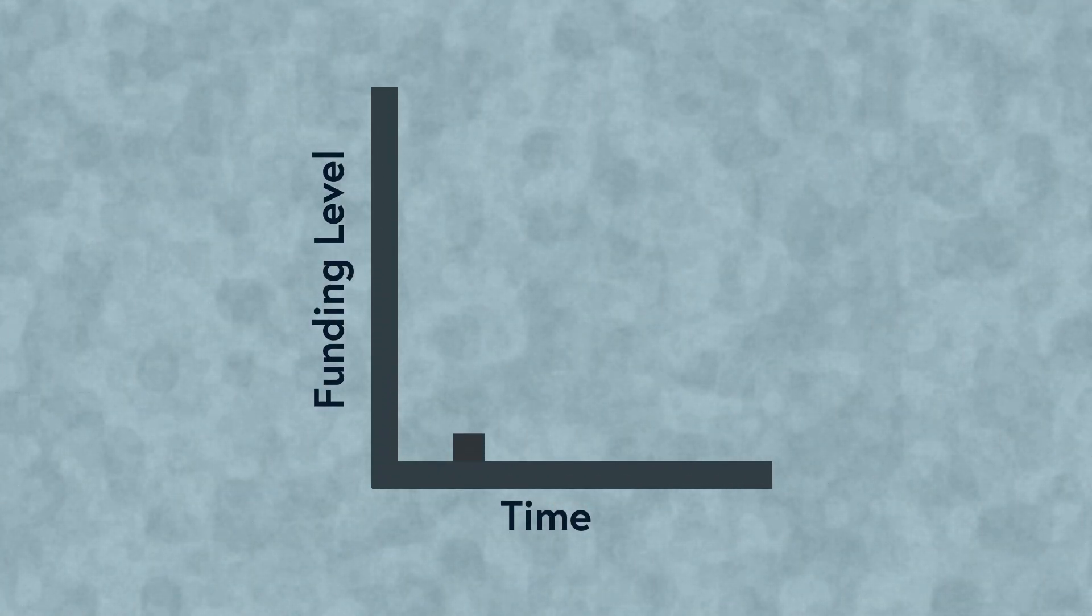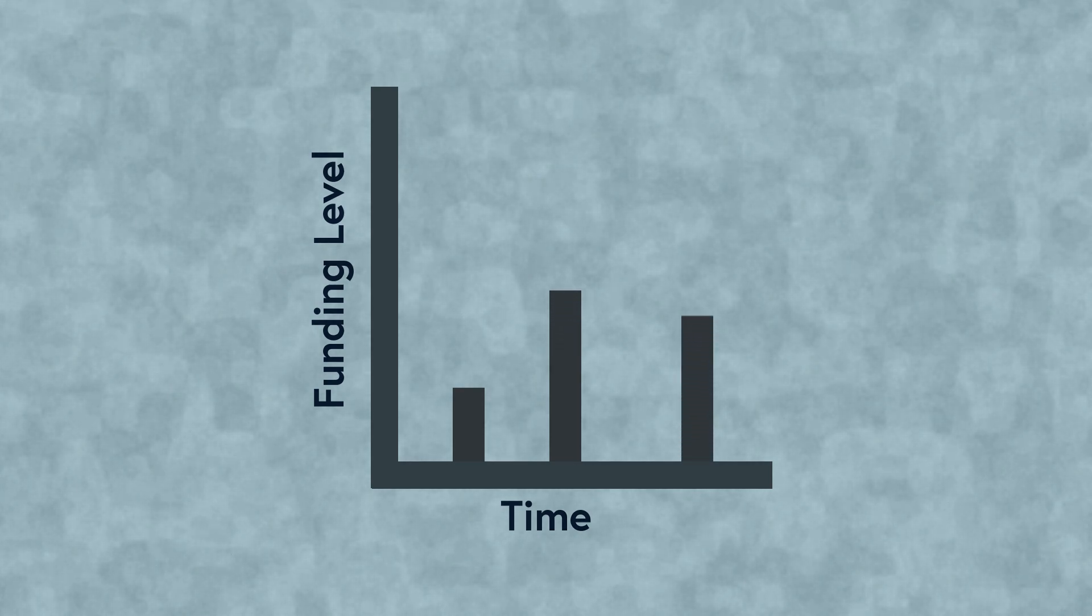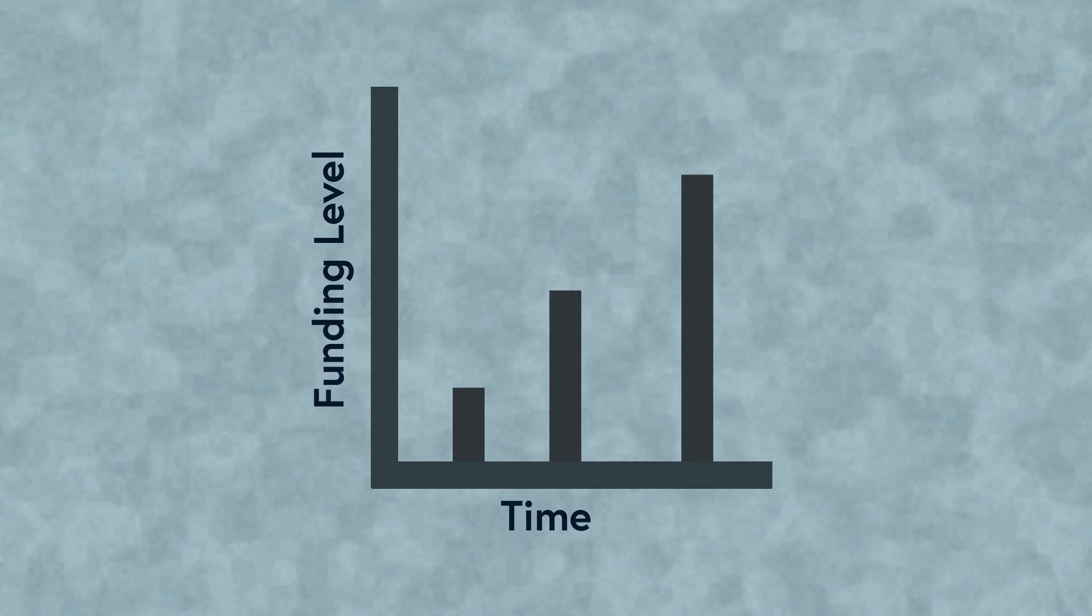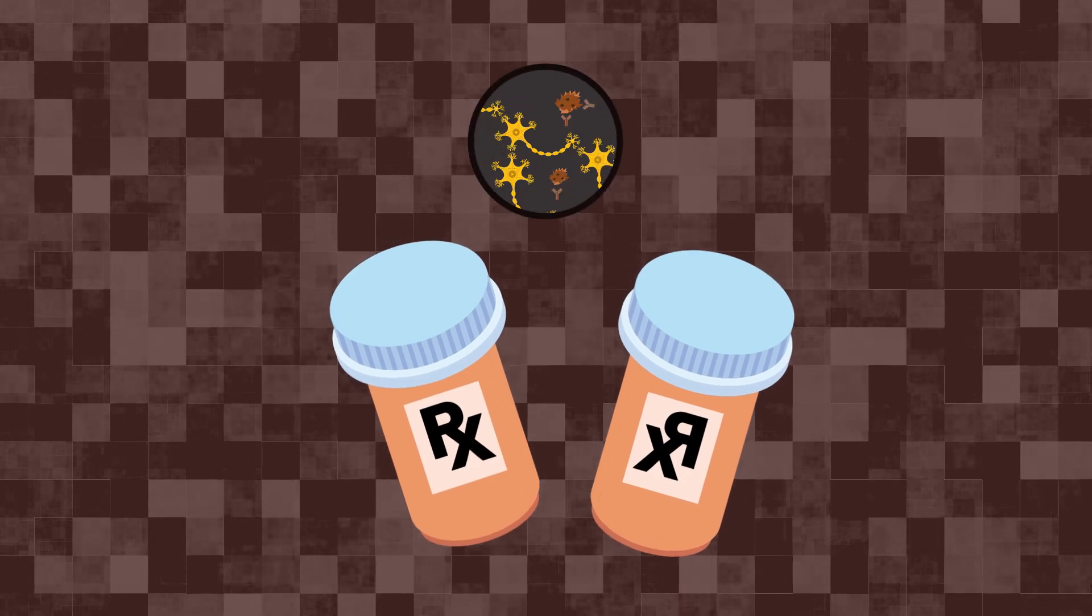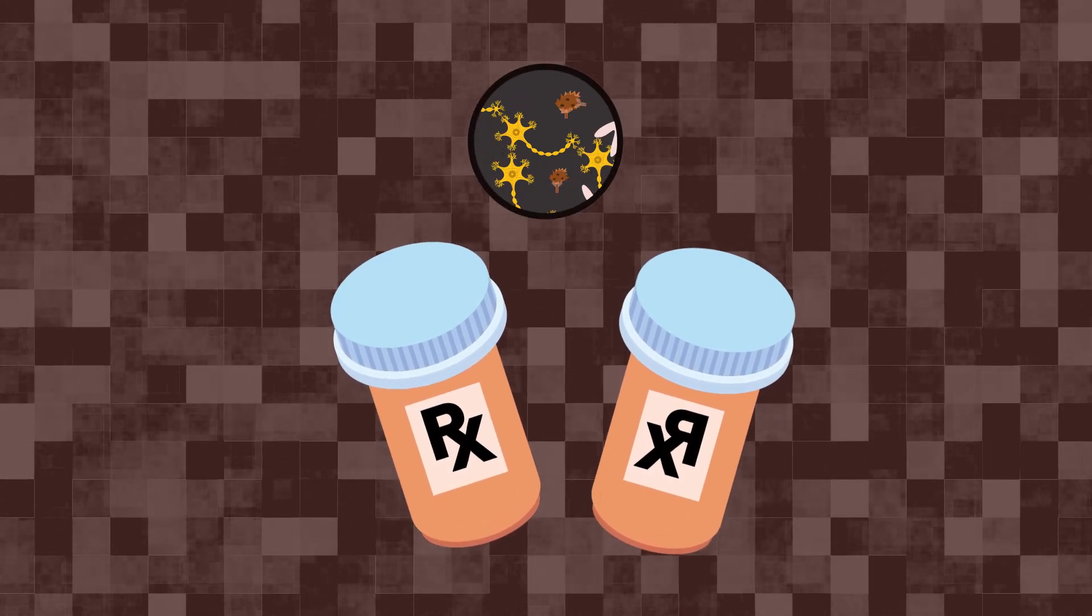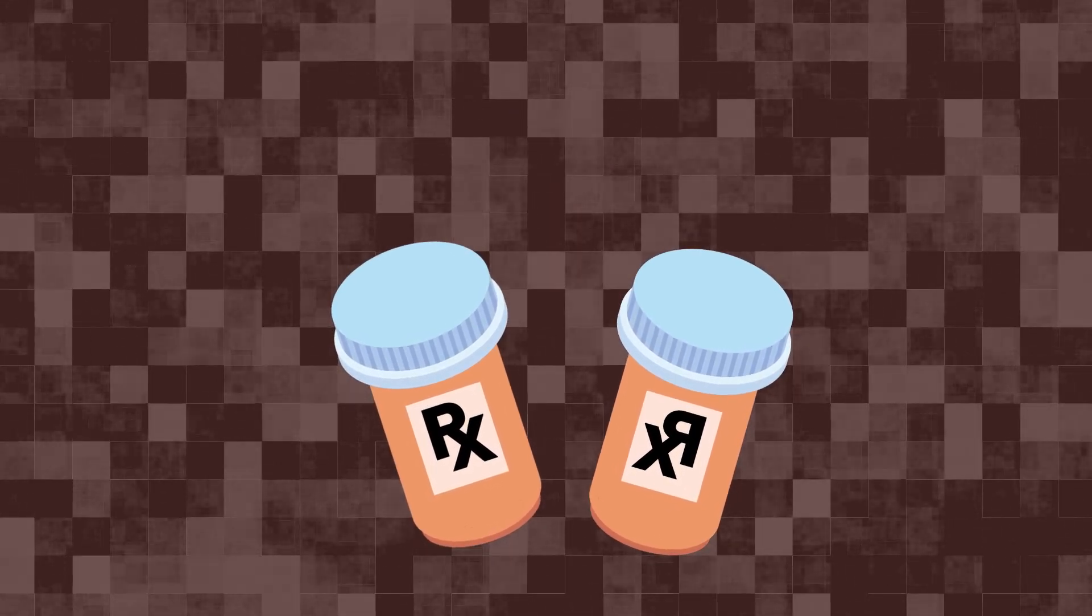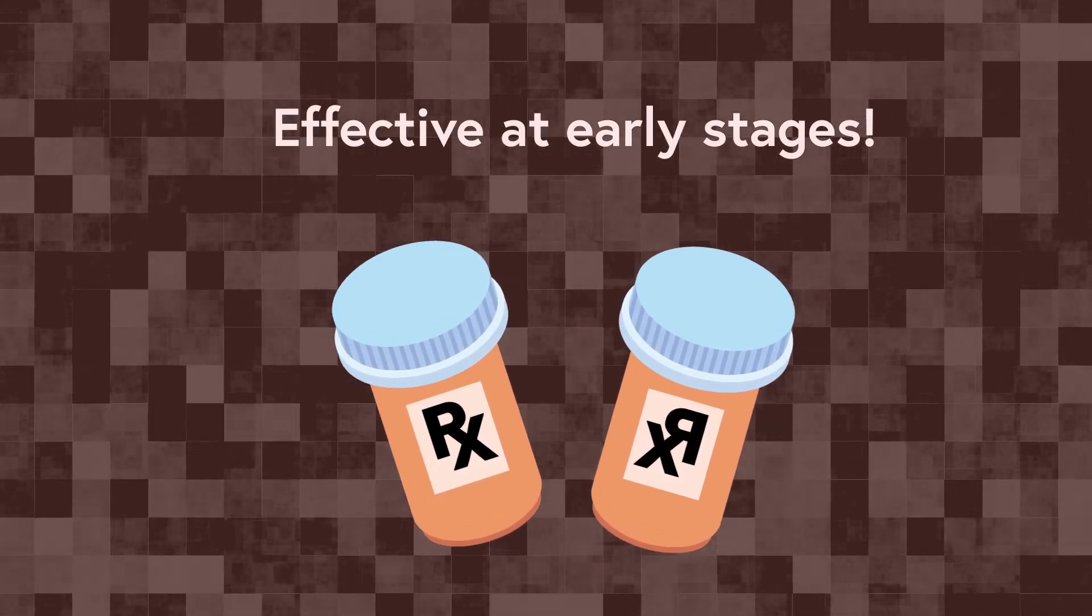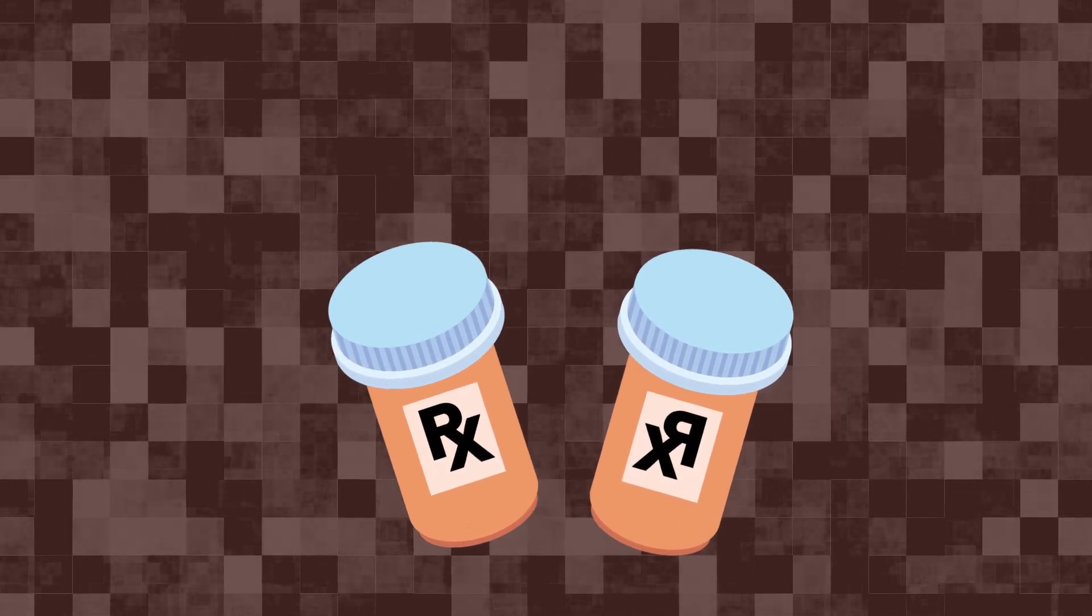While amyloid beta 56 didn't directly lead to clinical trials, it did spark more research in targeting amyloid proteins. Unfortunately, many drug trials aimed at targeting amyloid protein failed, leading many to wonder if the amyloid hypothesis is the right approach. It is worth mentioning that in recent years, the FDA has approved certain drugs that function as monoclonal antibodies against amyloid beta proteins, allowing the body's immune system to clear them out. However, these medications are only indicated for very early stages of the disease and merely slow its progression rather than stopping or reversing it.